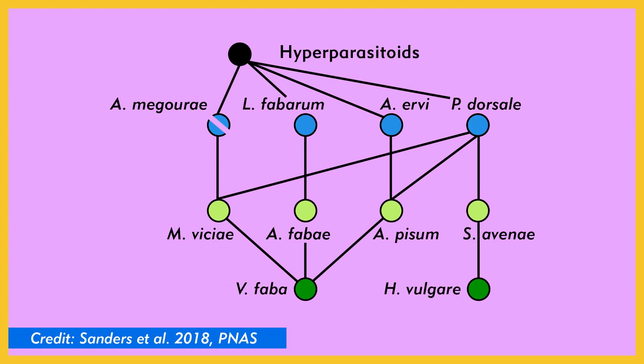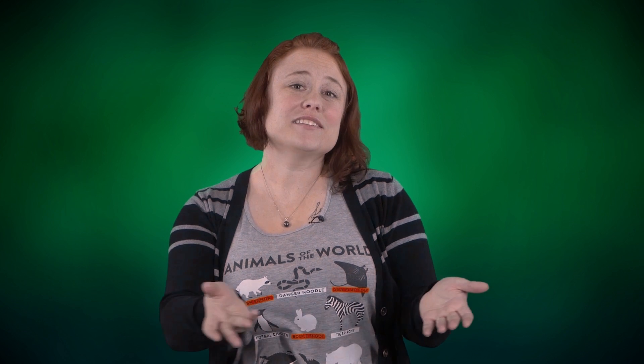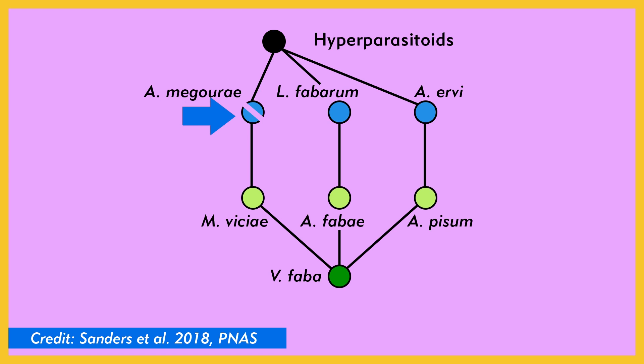The researchers also set up a mesocosm with trophic redundancy. This higher complexity food web looked like the simpler version, except they added another plant species, another aphid species, and an additional wasp that ate more than one type of aphid. The communities in all of the replicates were left to grow for about three generations. At that point, the researchers removed one species of wasps in half of the setups — this represents a primary extinction, and on the picture it's the wasp that's crossed out. Then they watched the other wasps on that trophic level to see if any secondary extinctions occurred.